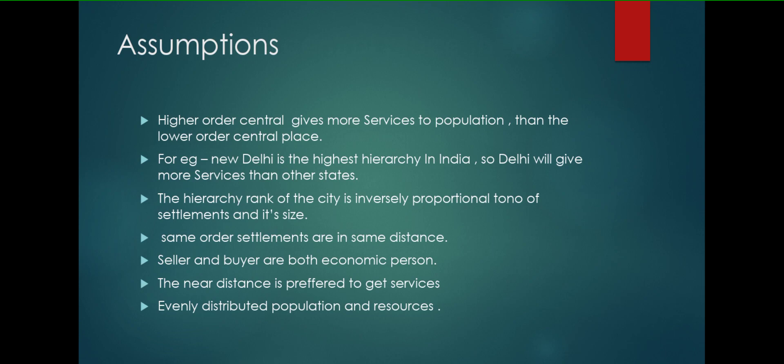The hierarchy rank of city is inversely proportional to the number of settlements and sizes. Same order settlements are in same distance. Seller and buyer are both the economic person. Near distance is preferred to get services. Every evenly distributed population and resources.